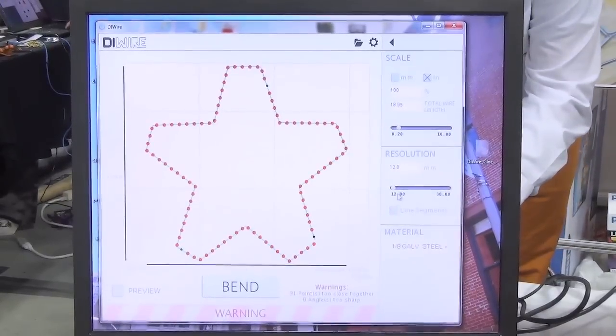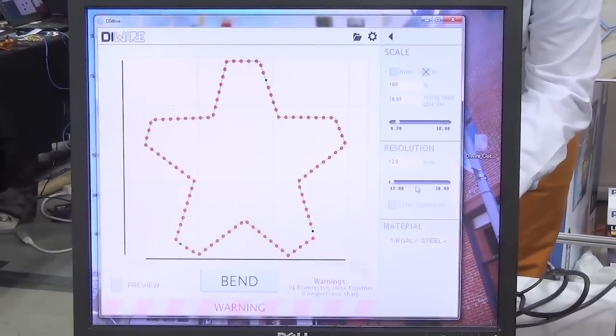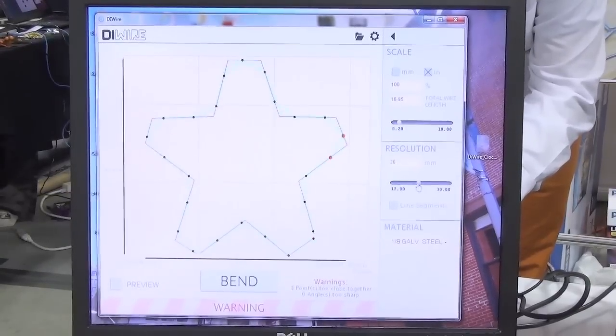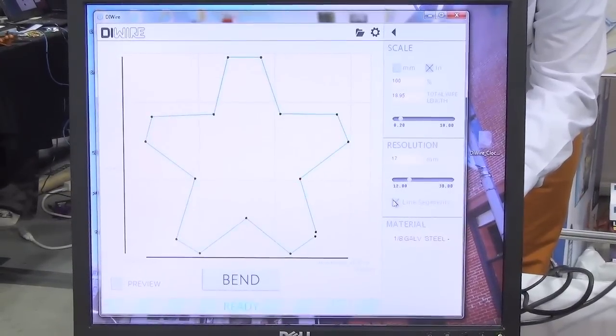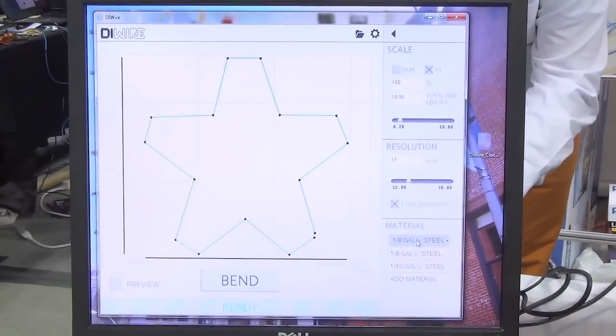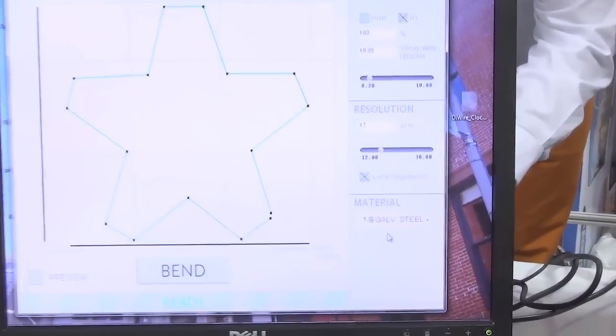You could change the resolution. You could have it recognize vertices. You could choose your material. Right now we're going to run eighth inch galvanized steel.